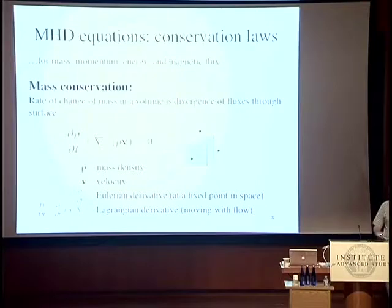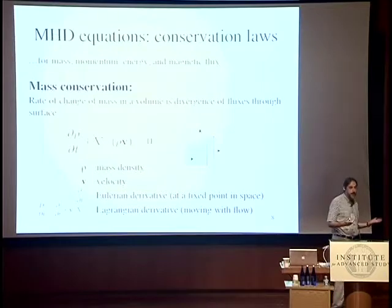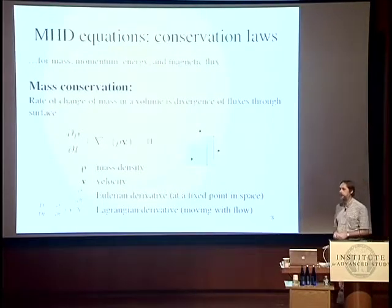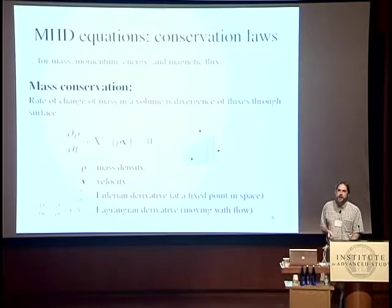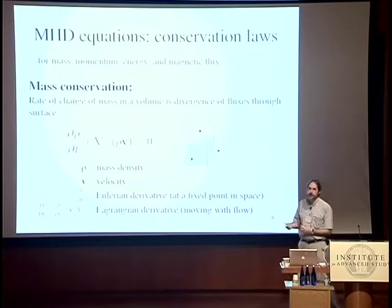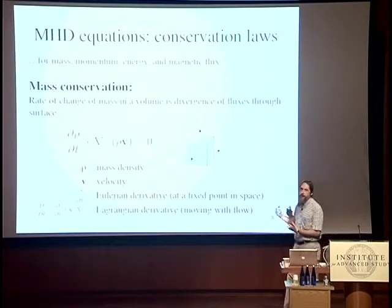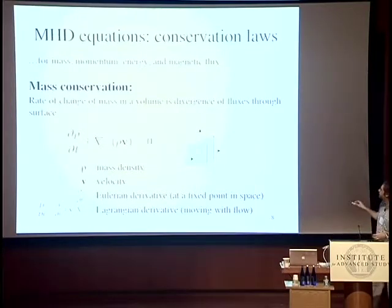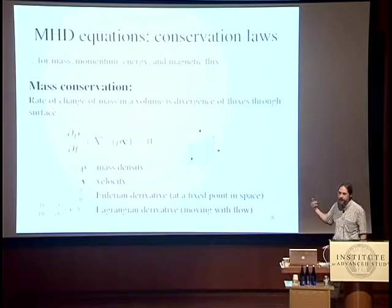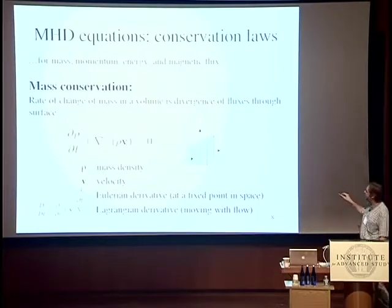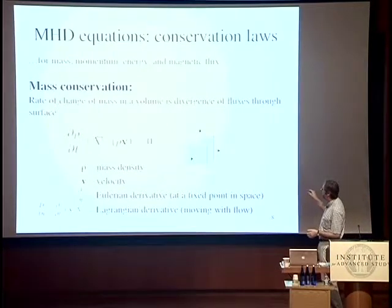The equations of MHD can be derived in many ways. I like to derive them from the collisional Boltzmann equation — they're simply velocity moments of it. You can find a closure relation for the system of moment equations: there's a relationship between the zeroth and second moment, an equation of state, because it's collisional and the particles are in statistical equilibrium. Another way is from basic physical principles: they're statements of conservation laws, and given that you can almost write them down directly. Mass can't be created or destroyed, so the rate of change of mass in a volume equals the divergence of the mass flux through the surface. The mass flux is ρV, so dρ/dt is just this divergence.